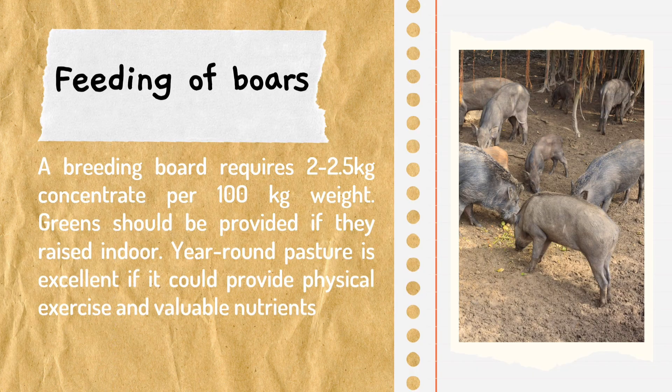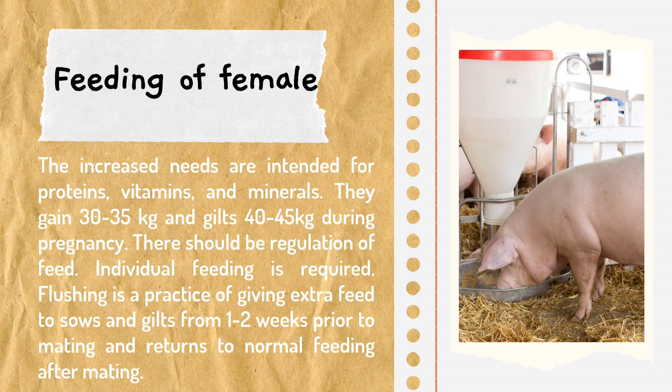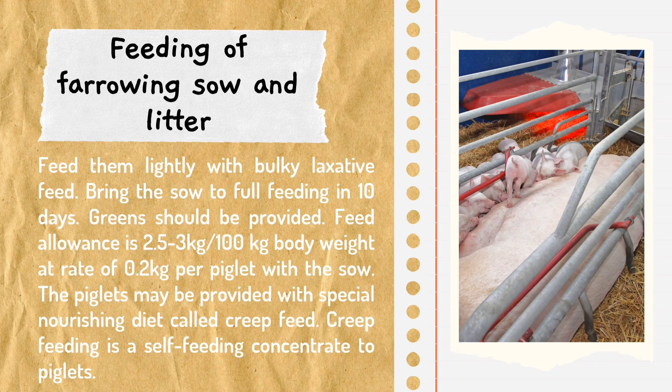For feeding of boars, a breeding boar requires 2 to 2.5 kilograms of concentrate per 100 kilograms of body weight. For feeding of females, the increased needs are intended for proteins, vitamins, and minerals. For feeding of farrowing sows and litter, feed them lightly with bulky laxative feed and bring the sow to full feeding in 10 days.